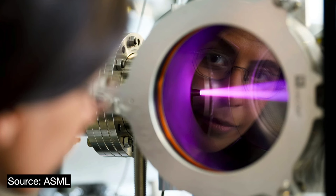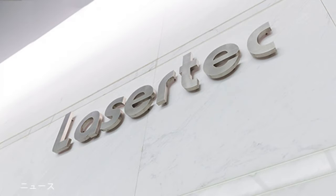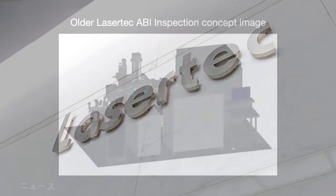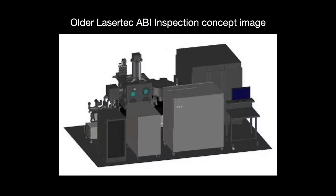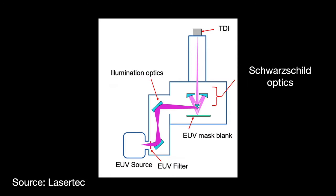There are many issues associated with this method, but actinic blank inspection is logically the most credible way to inspect the mask blanks. It took many years to develop these inspection tools. The most notable of which was developed by an alliance of two Japanese companies, Lasertech and IDEC, based on a concept advanced by Japan's National Institute of Advanced Industrial Science and Technology. This is a large tool over 4 meters wide and 5 meters long. It is like a little EUV lithography machine all by itself.